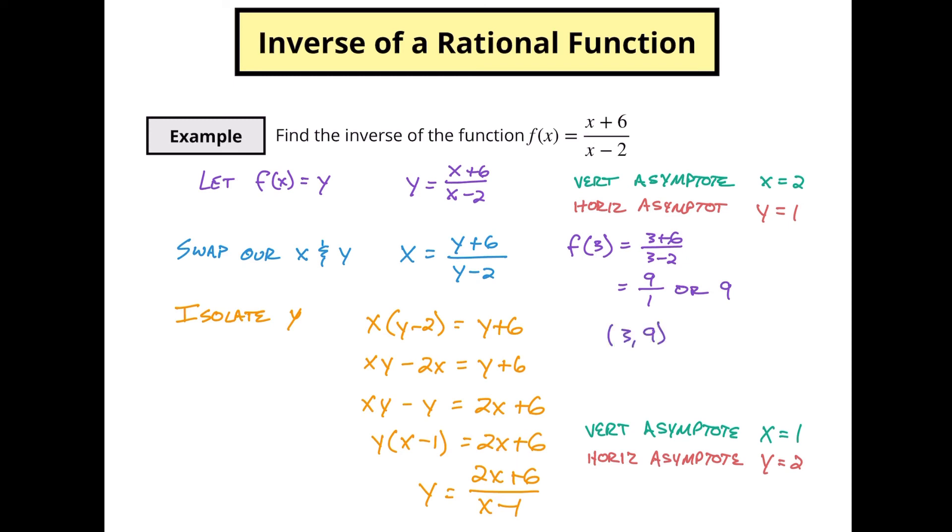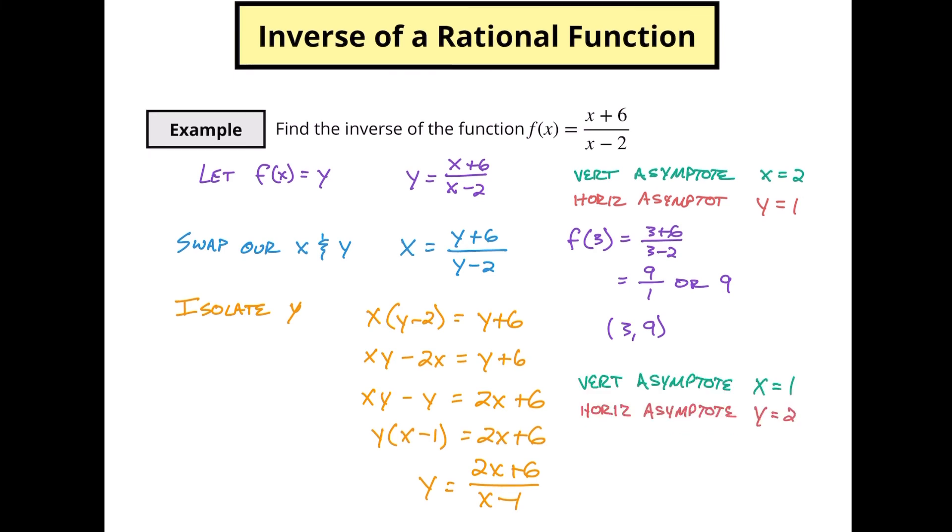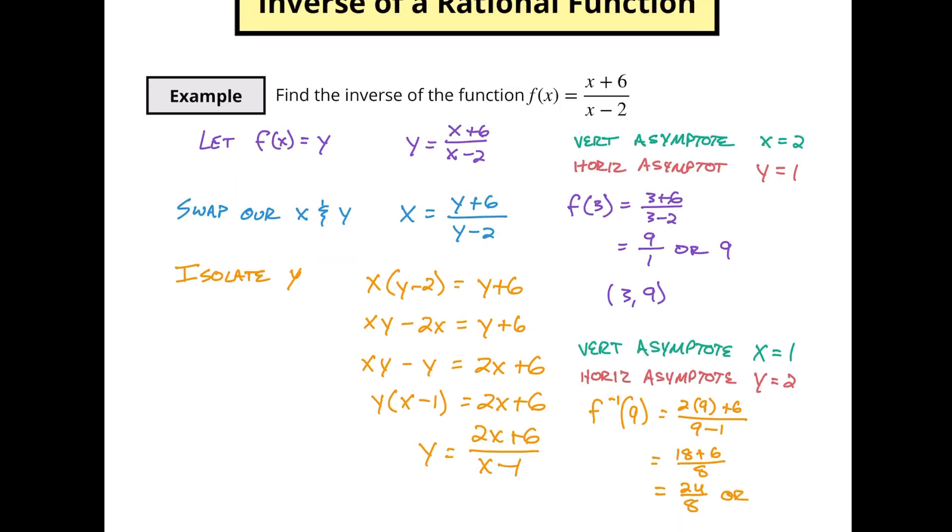And now for this bottom one, so if I find the inverse f(9), I'm going to have 2 times 9 plus 6 divided by 9 minus 1, which is going to be 18 plus 6 divided by 8, which is going to be 24 divided by 8, which we know is 3.